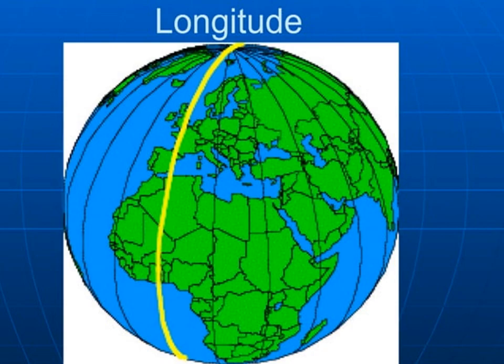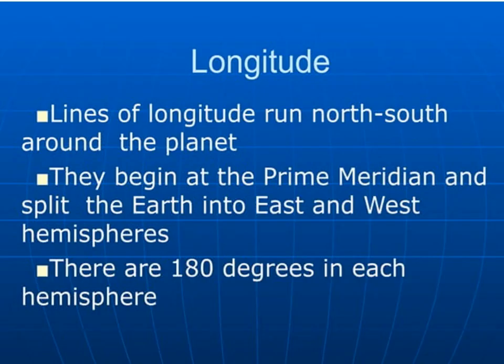Now we are going to discuss longitudes. The semicircles join the north pole and the south pole and run from north to south. These lines are called meridians. Lines of longitude run north to south around the planet. They begin at the prime meridian and split the earth into east and west hemispheres, with 180 degrees in each hemisphere.